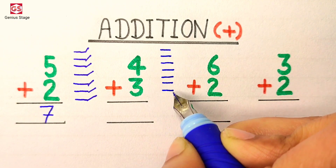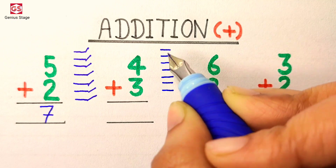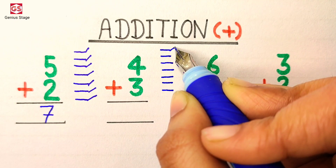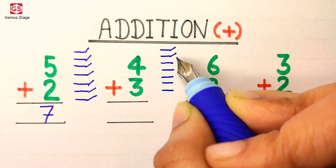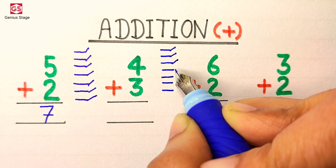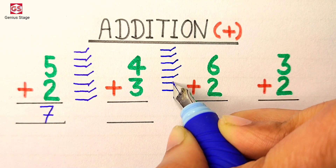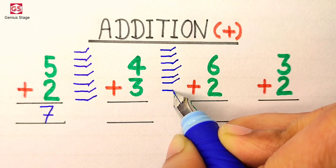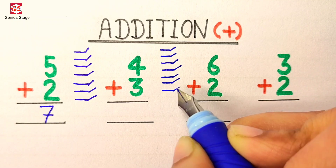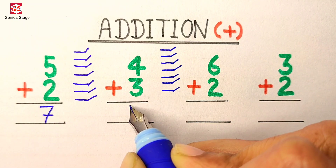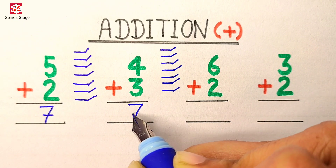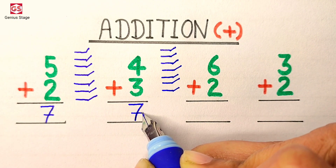Now we will count them all: 1, 2, 3, 4, 5, 6, 7. So the answer to this question is 7.